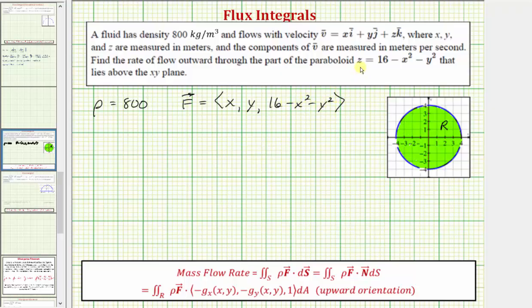Our surface z equals g of x comma y, which equals 16 minus x squared minus y squared. Now let's find our partial derivatives of g with respect to x and y. The partial of g with respect to x is negative 2x, and the partial of g with respect to y would be negative 2y.